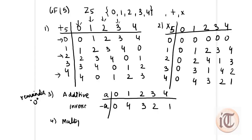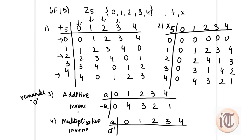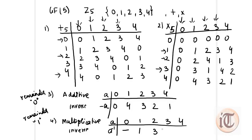Similarly, the multiplicative inverse is represented as a to the power minus 1, for elements 0, 1, 2, 3, 4. Here we use the multiplication modulo 5 table and look for remainder 1. For 0, no such value exists, so it does not exist. For 1, the multiplicative inverse is 1. For 2, the value that gives remainder 1 is 3, so the multiplicative inverse of 2 is 3. For 3, it is 2. For 4, the multiplicative inverse is 4.